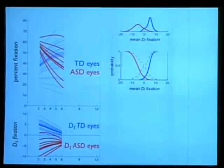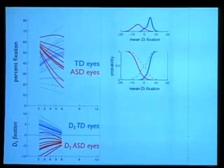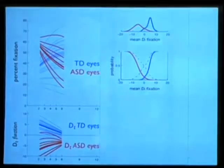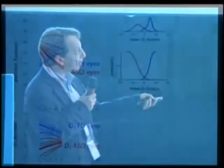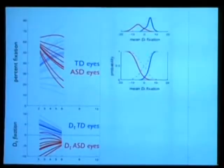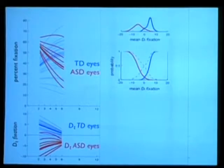We removed the labels of the children and created a distribution of probability of any child belonging to the autistic distribution or to the distribution of typical children.